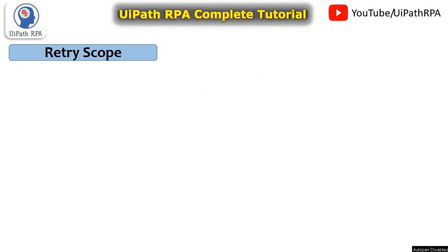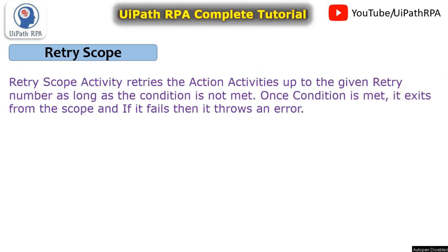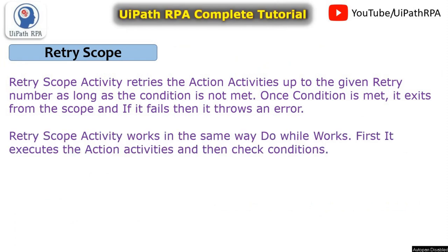What is retry scope? The retry scope activity retries the action activities up to the given retry number as long as the condition is not met. Once the condition is met, it exits from the scope, and if it fails, then it throws an error. The retry scope activity works in the same way do-while works: first it executes the action activities and then checks the condition.